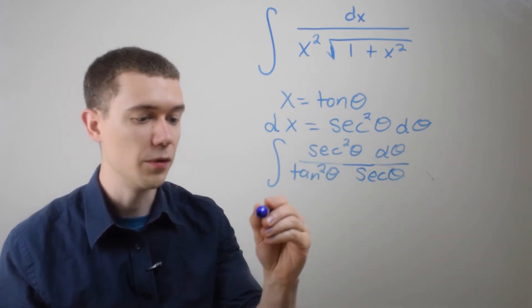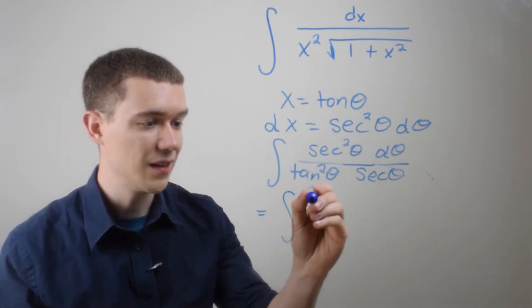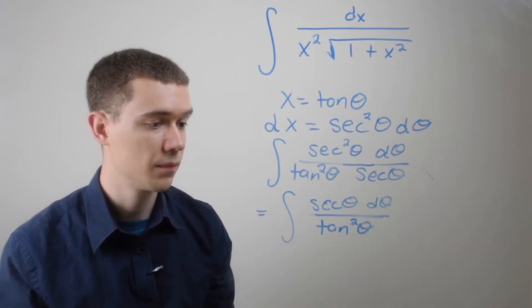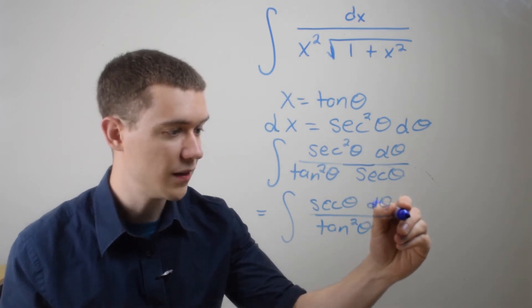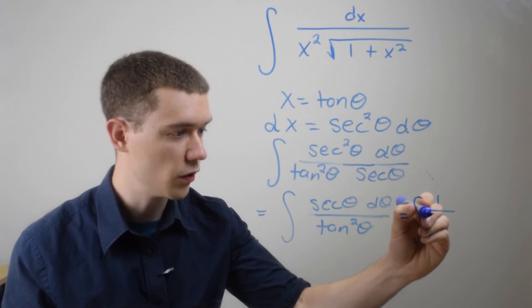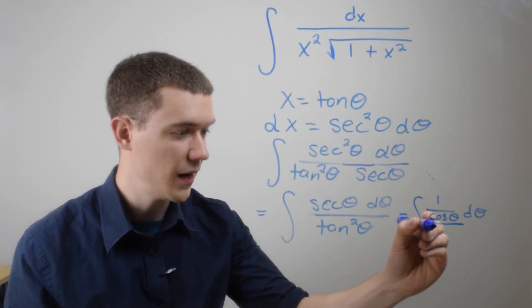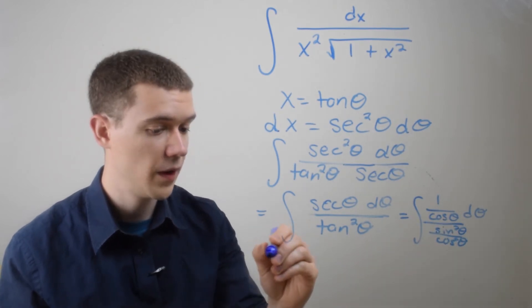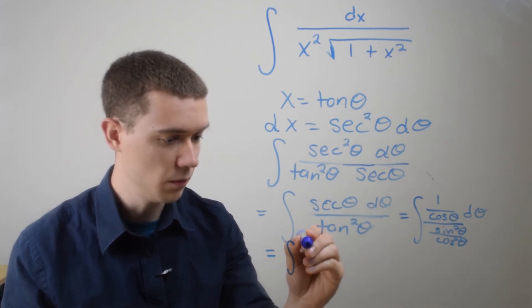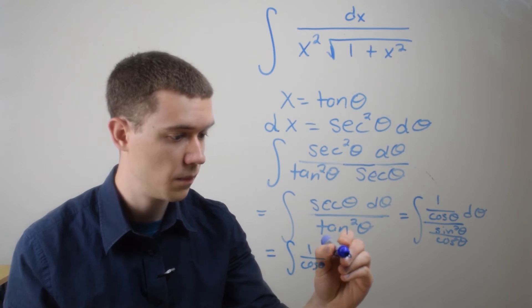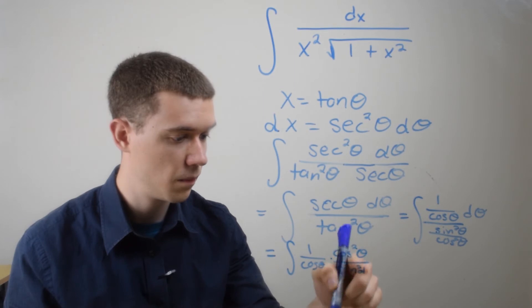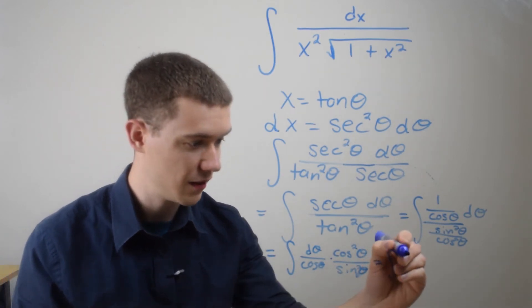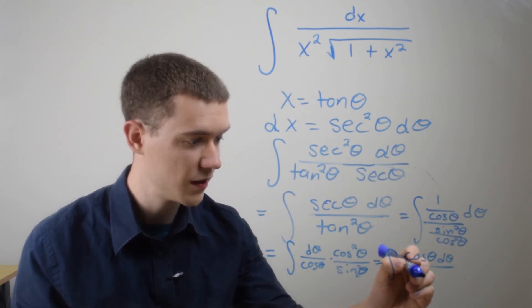And now we can just do some simplification, right? Secant squared over secant is just going to be a secant to the first up top over tangent squared. And if I wrote this like sines and cosines, this would be 1 over cosine theta. And tangent squared, that's sine squared over cosine squared. And if I'm dividing fractions, I can multiply by the reciprocal. And it looks like now I can cancel one of these cosines. So I've got cosine theta d theta over sine squared theta.